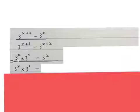3 to the power of x plus 1 becomes 3 to the power of x times 3 to the power of 1, and 3 to the power of x minus 2 becomes 3 to the power of x times 3 to the power of minus 2.